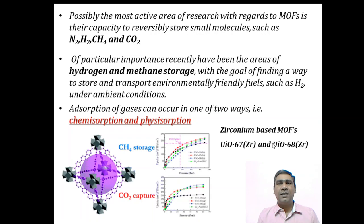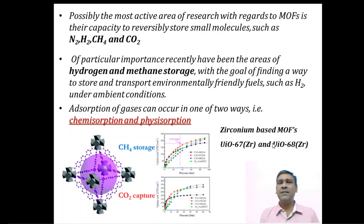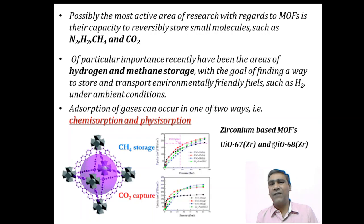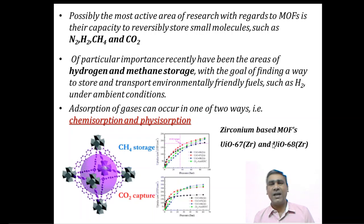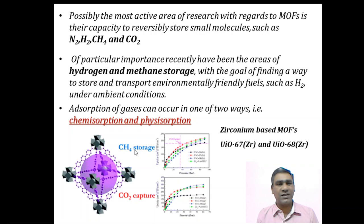The most active research area for metal organic frameworks is their capacity to reversibly store small molecules such as nitrogen, hydrogen, methane, and carbon dioxide — taking them out when needed. Of particular importance is hydrogen and methane storage to transport environmentally friendly fuels under ambient conditions. This is done by chemisorption or physisorption, as illustrated by zirconium-based MOFs capable of storing methane and carbon dioxide, with numerous examples in textbooks and journals.